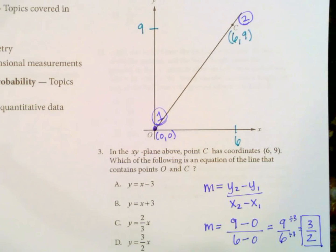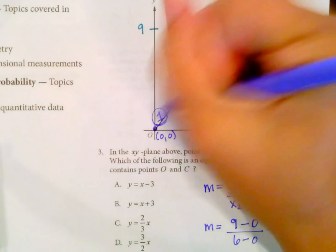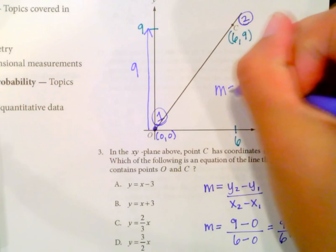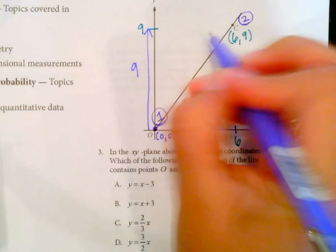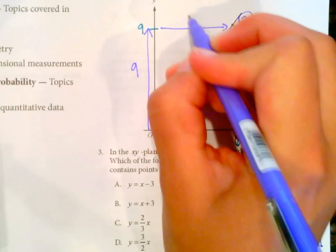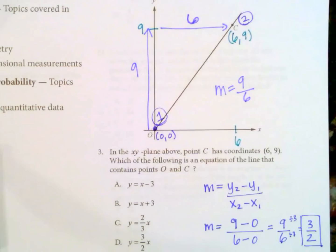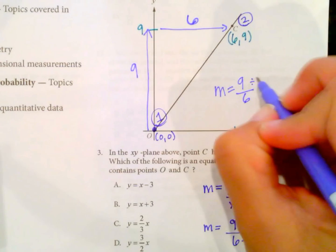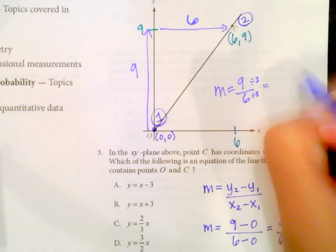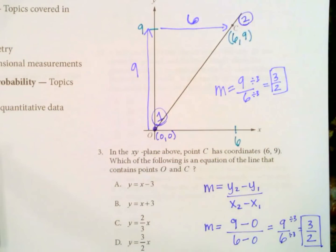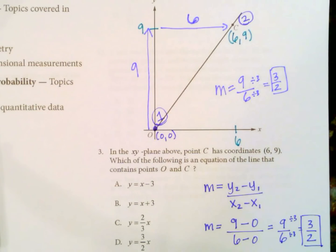Now just as a quick review, if we're doing it from the graph, we can just see how far we had to rise over run. So we have to rise 9. So m equals 9 over run 6. So 9 over 6. And again, if we reduce this by dividing by 3, we get 3 over 2. So either way, you can use the graph if you're given one or the two points using the slope formula.